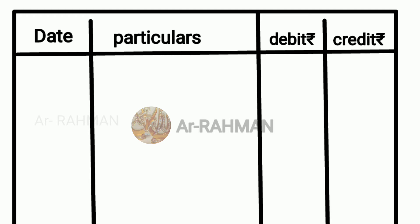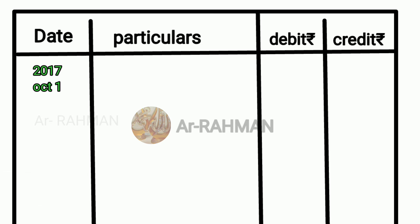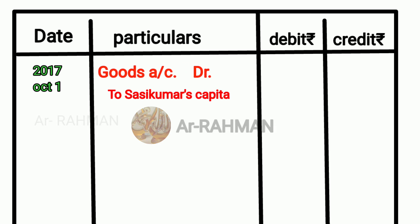Date first post — this is the first entry, October 2017, at the top of the list. Now, debit what comes in, credit what goes out — let's use real account. So debit what comes in: what comes in is goods and business. To Sassikumar — why? Because he is the owner.